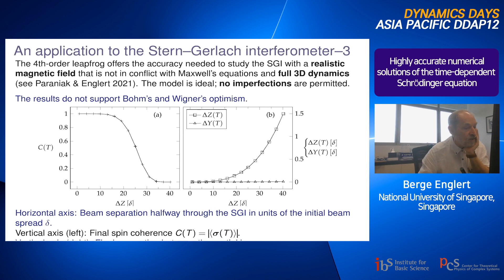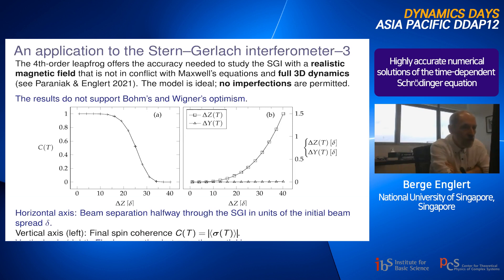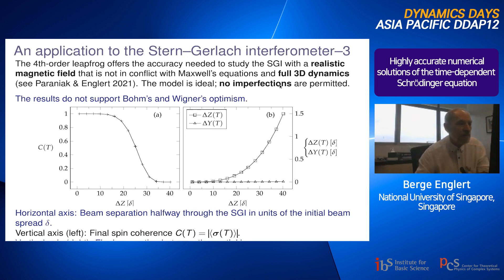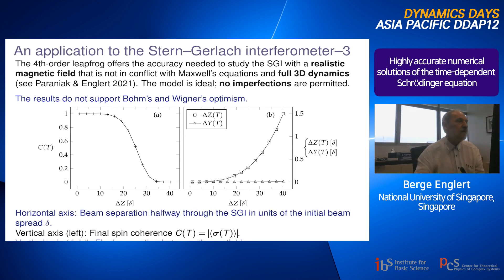We use a realistic Maxwell-consistent magnetic field with full three-dimensional dynamics — the atom moves in x and y as well as z — and we apply the fourth-order leapfrog, which provides the accuracy needed to study this interferometer; without it we simply could not do this calculation. Importantly, the model is ideal: we are not even considering the additional imperfections discussed earlier, which would come on top of what I'm about to show.